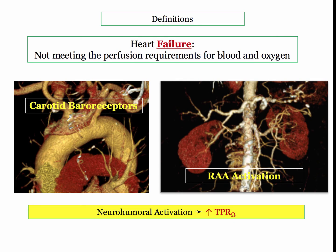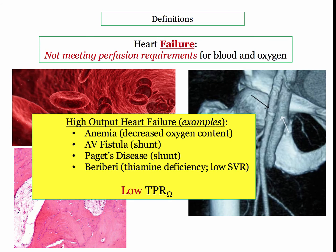The body responds to this failure of perfusion. The neurohumoral response will be covered in the next video and is a huge topic for the boards. But for now, suffice it to say that the carotid baroreceptors and the RAA system will protect perfusion by raising total peripheral resistance. Sticking with the definition of not meeting perfusion requirements helps us understand the concept of high output heart failure.